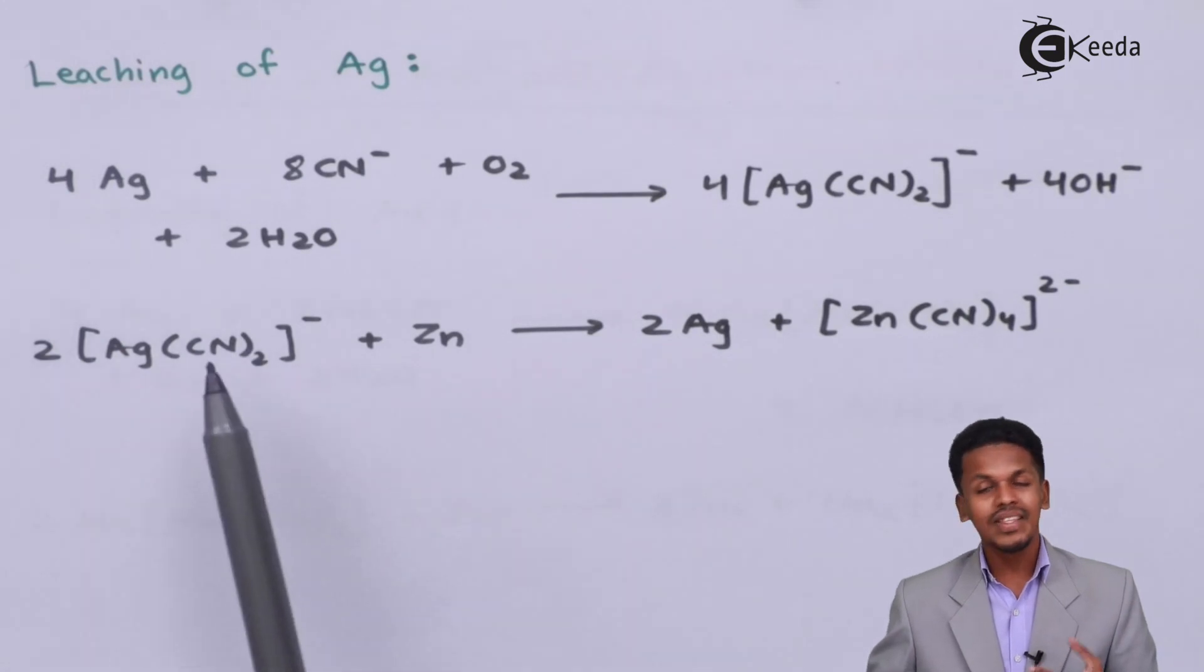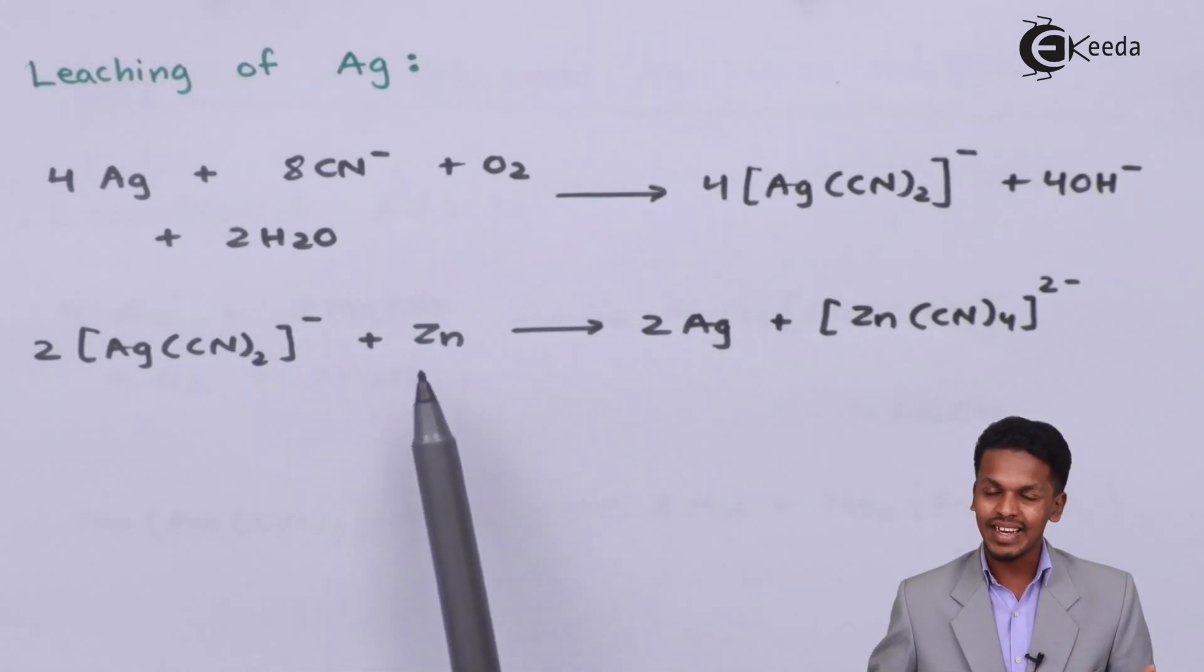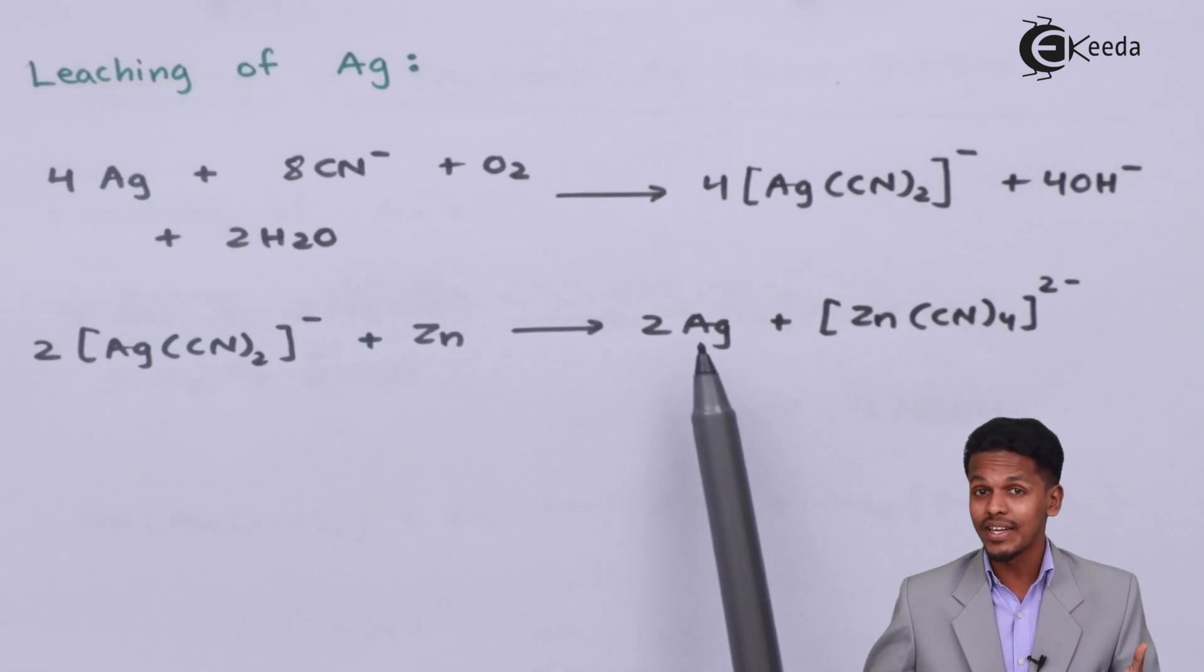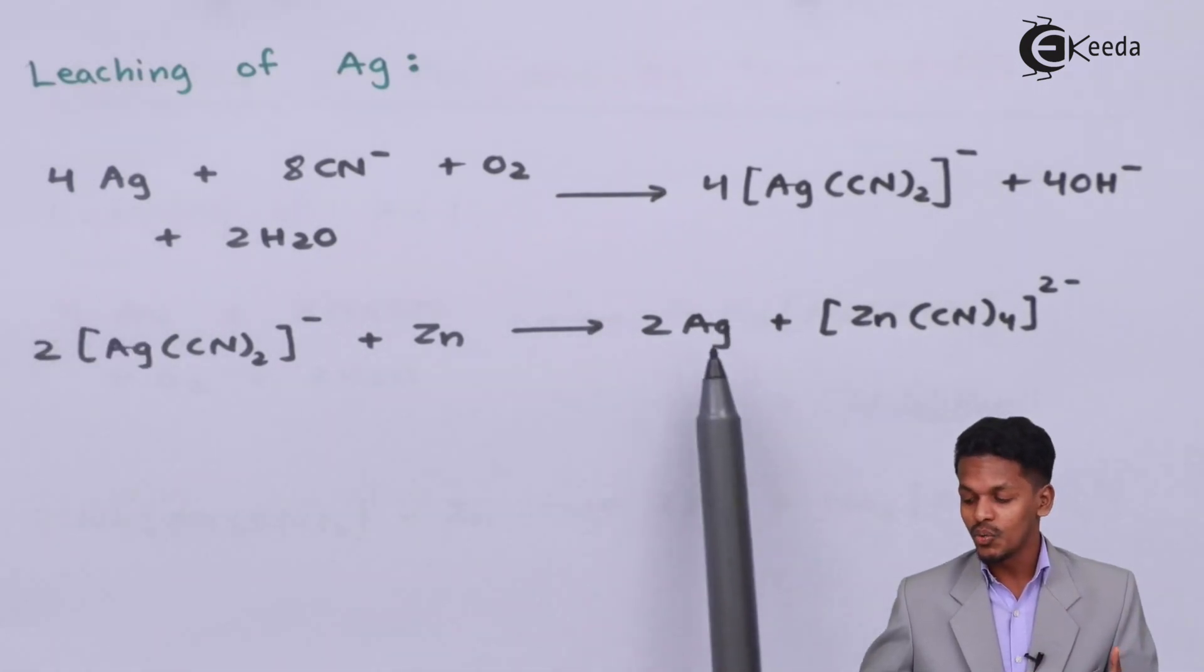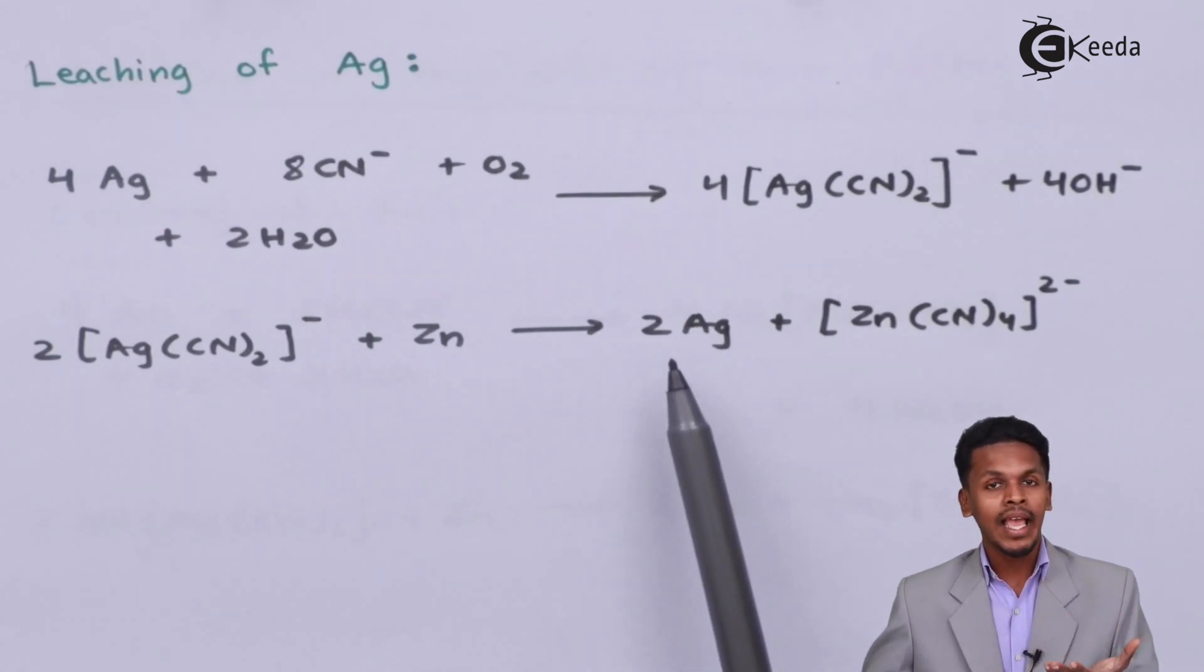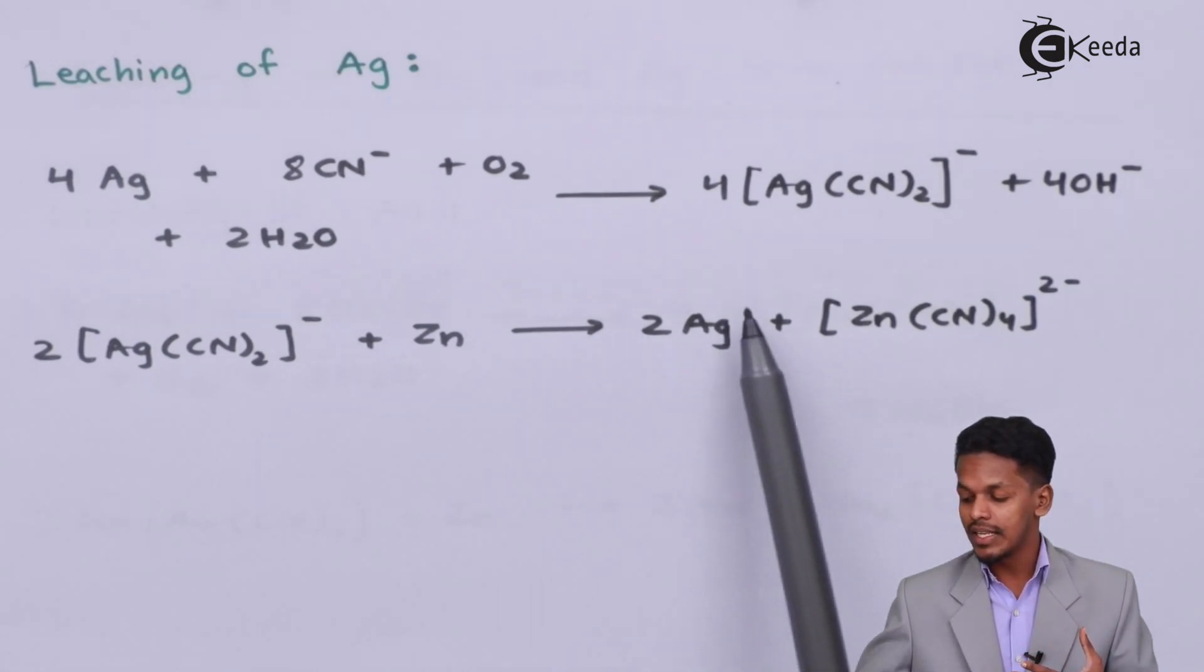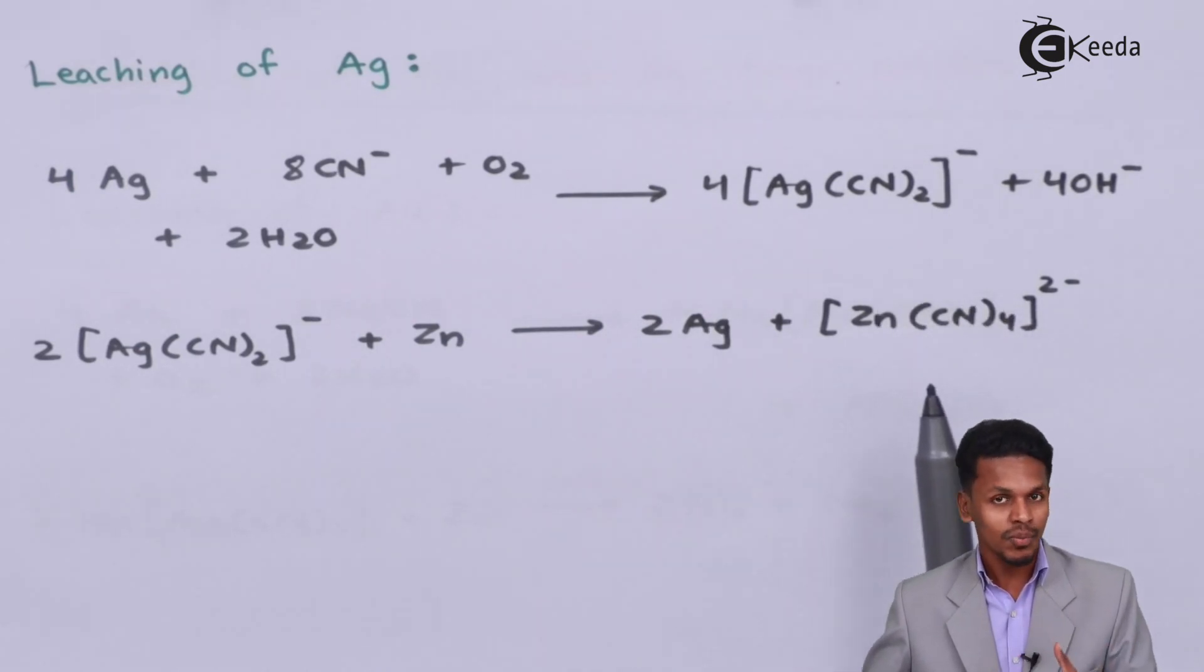Whenever 2 moles of this complex is treated with zinc, which is more electropositive and thereby acting like a reducing agent, it will help to reduce this Ag+ to Ag which has an oxidation state of 0, thereby converting the impure silver to pure silver. We have got 2 moles of Ag and the zinc complex which is soluble.